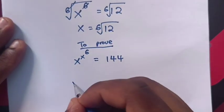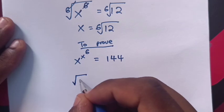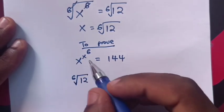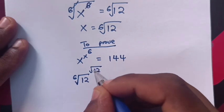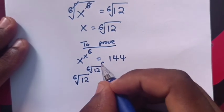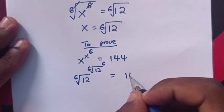So x is 6th root of 12, and power of x is 6th root of 12, power of 6 equals 144.